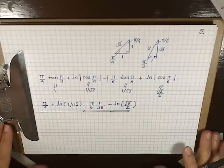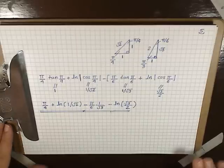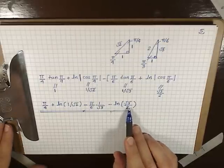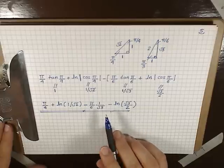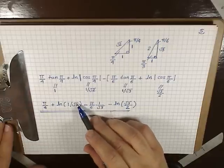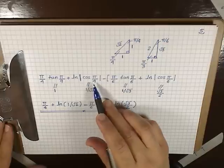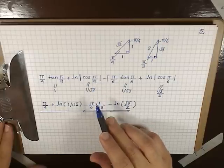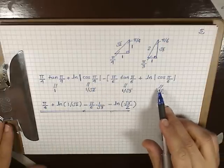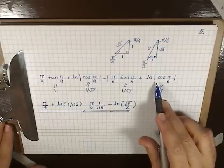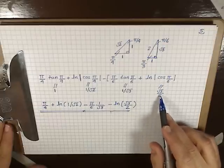A correction to the last page: we should have ln(√3/2). Also, from one step to the next, we're able to drop the absolute value because 1/√2 is a positive number, and similarly we can drop the absolute value for ln(√3/2) because √3/2 is also a positive number.